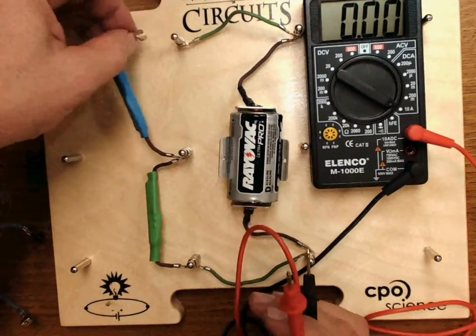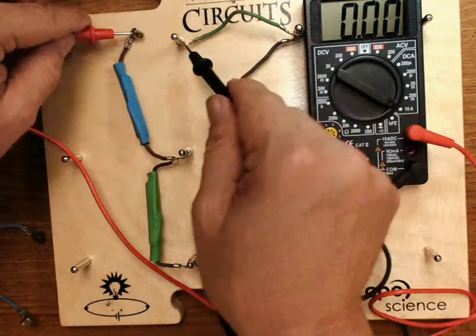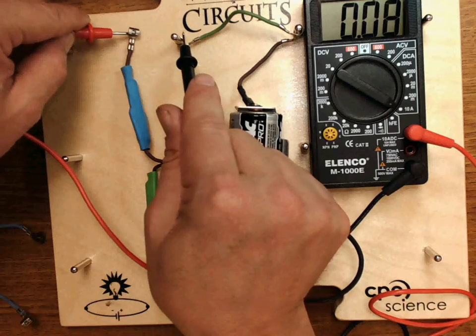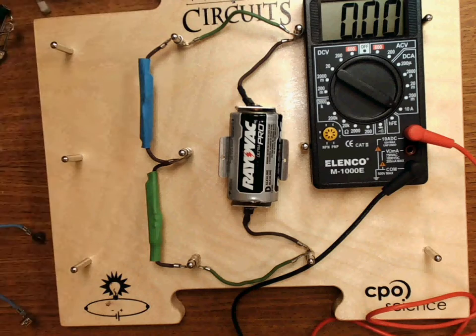To measure current, you must open the circuit and complete the circuit with the meter. So we have 0.7 amps. So that's how to measure a series circuit.